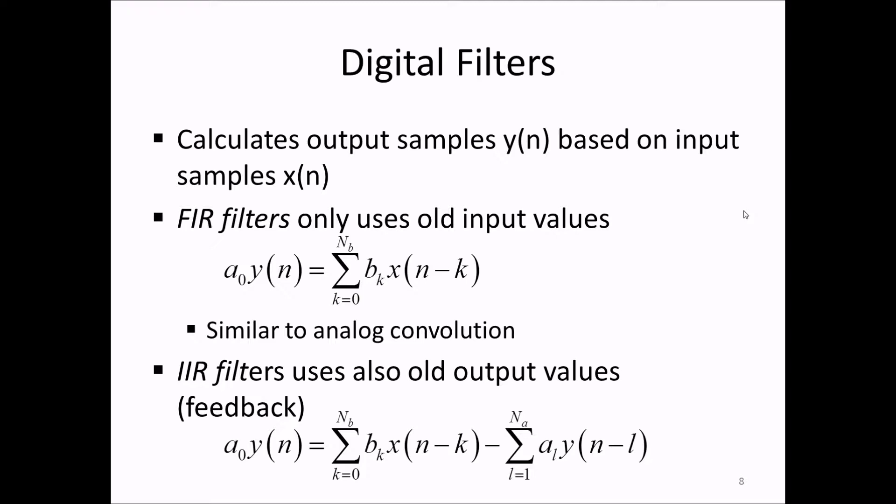A sub 0 times y of n equals the sum of old input values as before but then minus another sum of coefficients that we call a times old output values. This can be seen as feedback and makes it possible to produce filters with complicated characteristics without using very many coefficients. FIR filters are typically rather computer consuming.